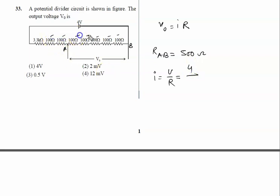The net resistance is 700 plus 3.3 kilo ohm. 3.3 kilo ohm equals 3300 Ohm.